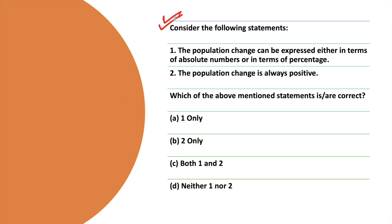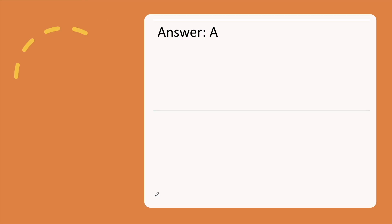The next question: Consider the following statements. Statement 1: Population change can be expressed either in terms of absolute numbers or in terms of percentage. Statement 2: Population change is always positive. Which of the above statements is correct? Answer the question wisely. The correct answer is option A.